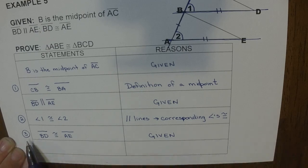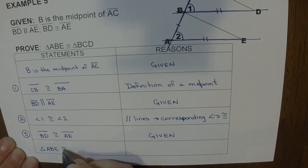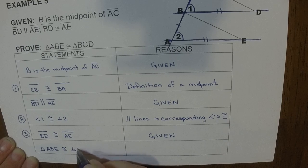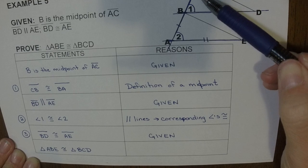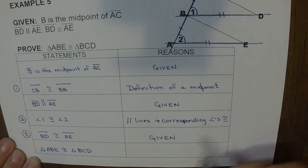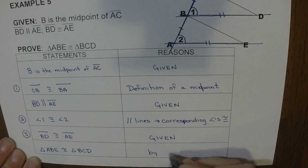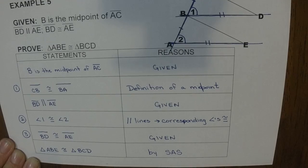So now I have my three congruencies. So now I'm ready to state my proof that triangle ABE is congruent to triangle BCD. So now I have to go up here and look at why. Well, it's side, angle, side.